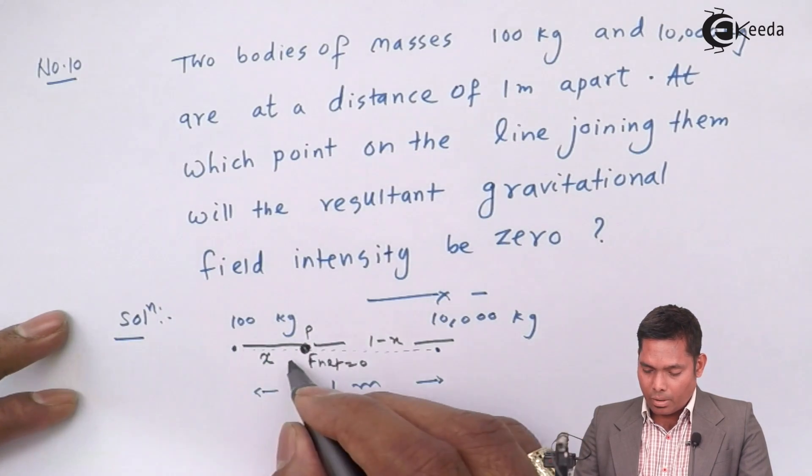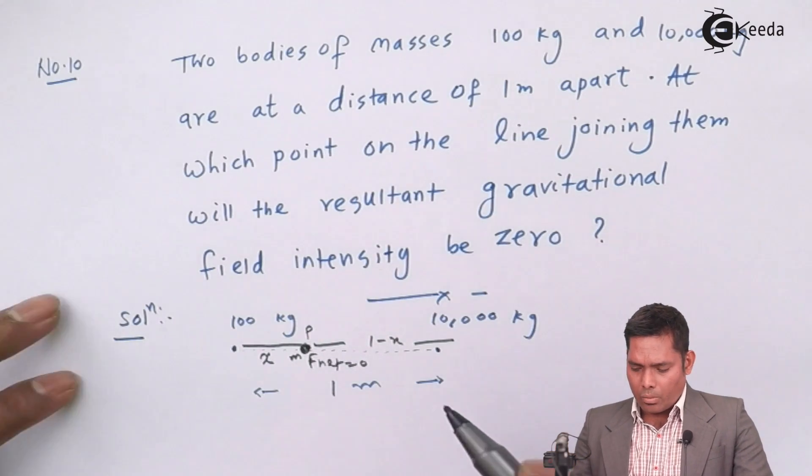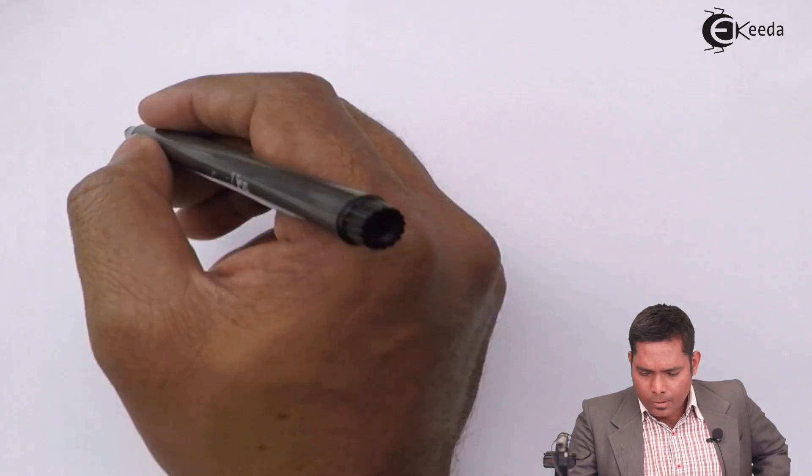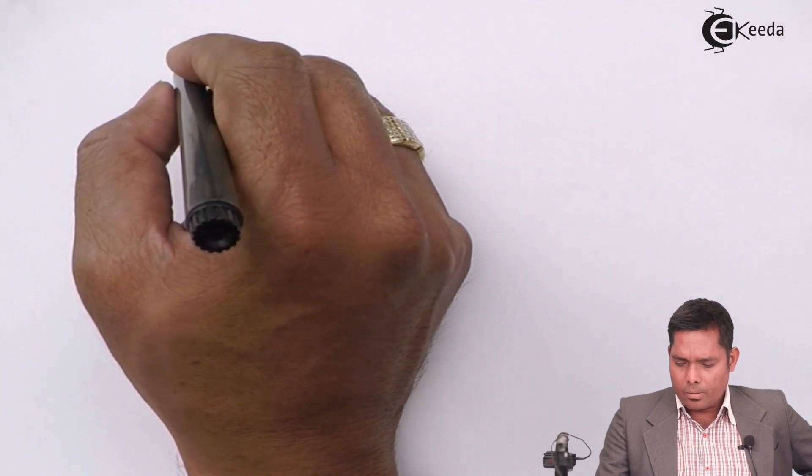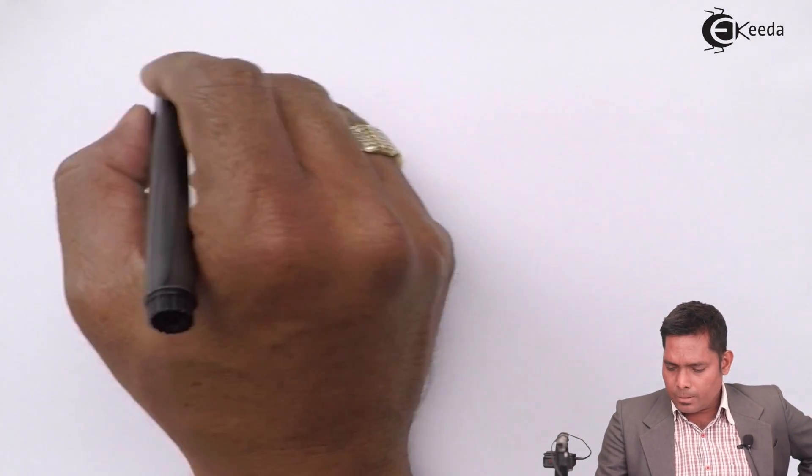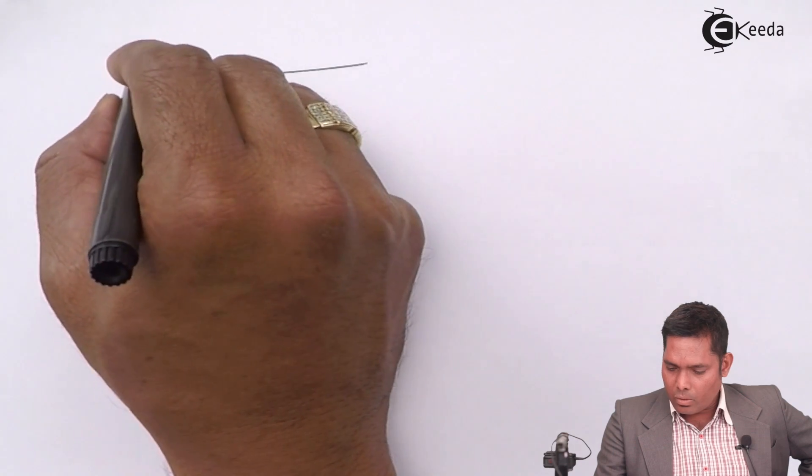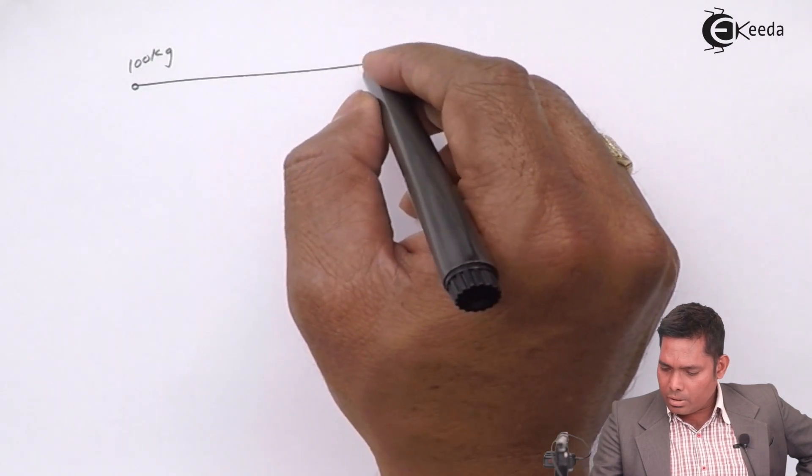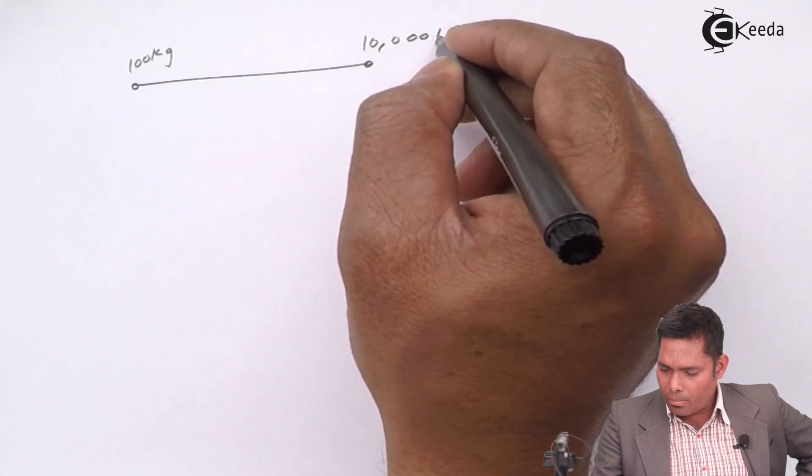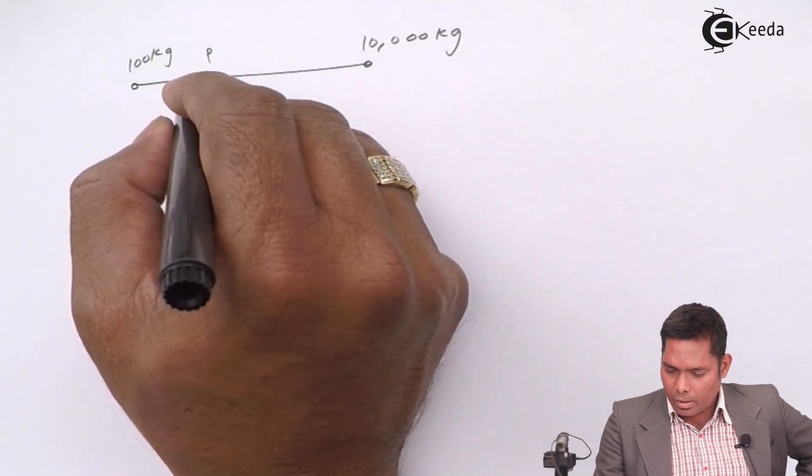Suppose this point is having mass small m. On this particular point, a particle having point mass m - this is the situation where this mass is 100 kilogram and this is 10,000 kilogram. This point is P where I have zero.